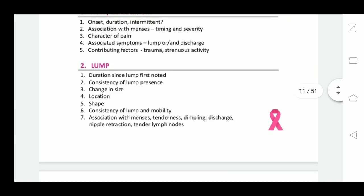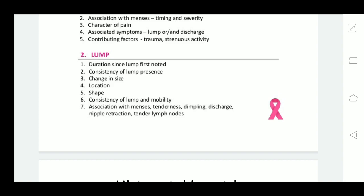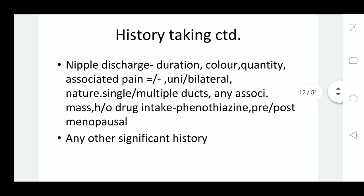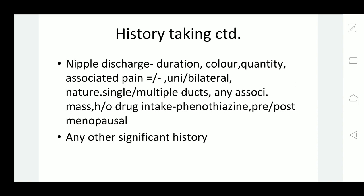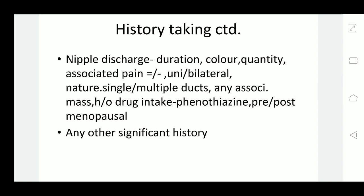The next important complaint may be a lump. When a lump is complained of, we have to ask when she first noticed the lump and its consistency. Next, I'll ask about nipple discharge — the duration, color, quantity, and nature of the discharge. Is there any associated pain? Is it unilateral or bilateral discharge? Is it from a single duct or multiple ducts? Is there any associated mass? Also, whether the patient is premenopausal or postmenopausal, and if she has any history of drug intake like phenothiazines. Ask about any other significant history.